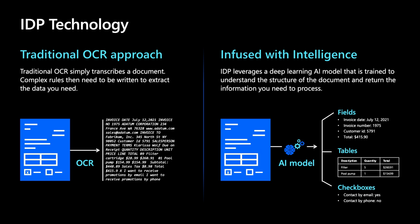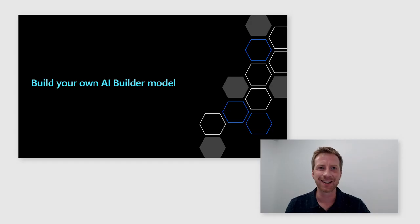IDP can understand specific fields like an invoice date or an invoice number. It can understand complex tables used to store information, and it can even understand specific fields like a checkbox. Let's go through how you can build your own AI model to automate document processing with our easy-to-use point-and-click solution.